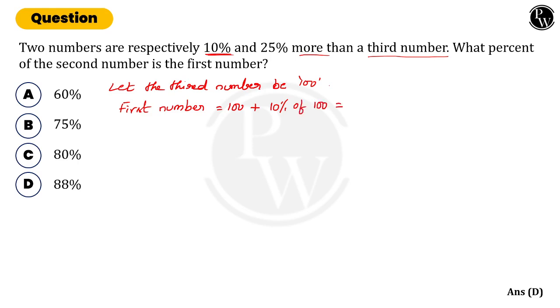So 10% of 100. We will get 100 plus—10% of 100 is how much? 10 by 100 into 100. So these two will get cancelled. 100 plus 10, we will get 110. This is the first number.